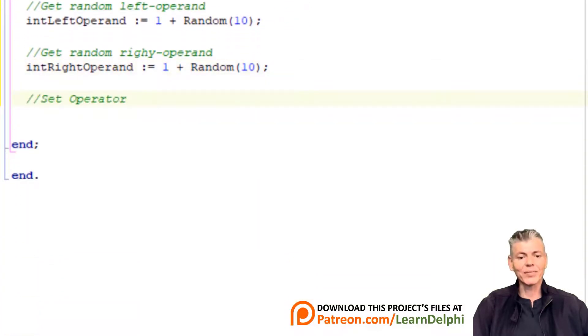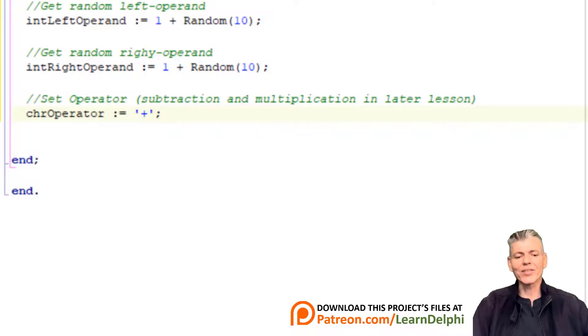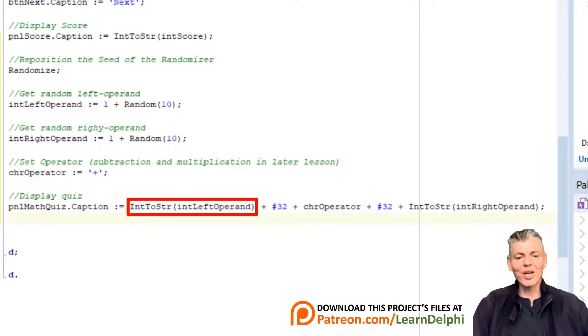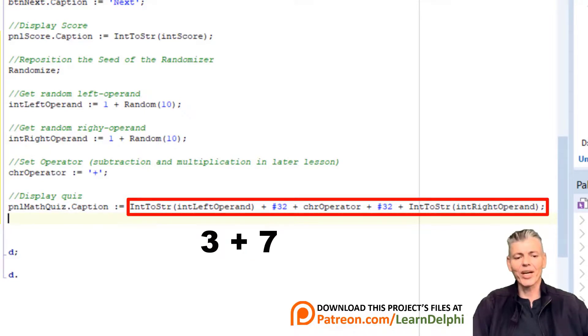Make a new line and type this comment: Display quiz. Press enter and type chrOperator := '+'. Later we can also test it with other operators. Now we have two random operands and the operator in three different variables. So let's build up our math question and display it in a panel. Go to the next line and type this statement: pnlMathQuiz.Caption := IntToStr(intLeftOperand) + Chr(32) + chrOperator + Chr(32) + IntToStr(intRightOperand). Here we take the random number in intLeftOperand and convert it to a string. Then we concatenate it with the ASCII number 32, in other words a space. Then we concatenate that with the plus sign in chrOperator.